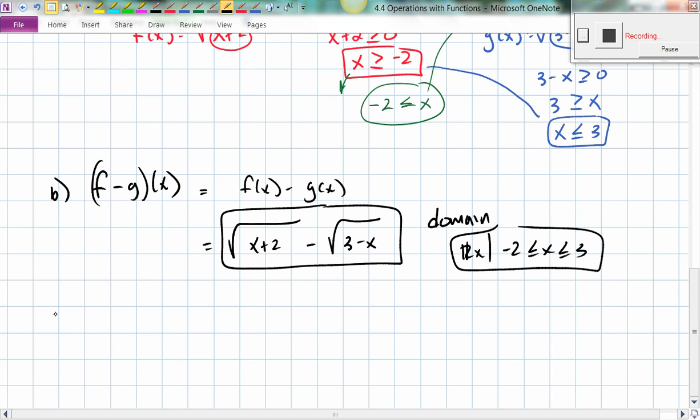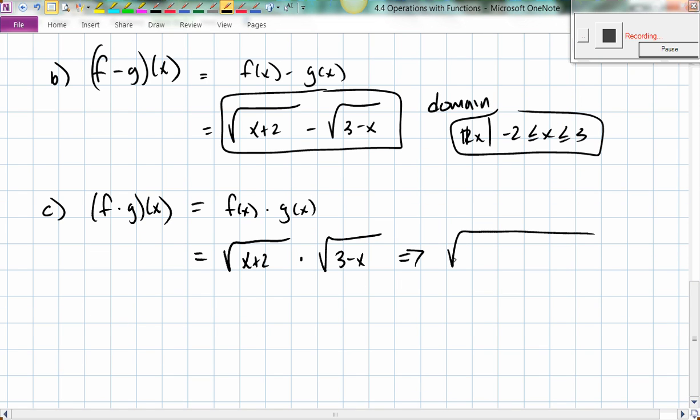And in fact, nothing changes for the next one either. So let's do c. What if I did f times, right, well, that's just equal to, it's just equal to f of x times g of x. So that's going to be the square root of x plus 2 times the square root of 3 minus x. Now, this one I can take a little further and write it as a single square root of x plus 2 times 3 minus x.